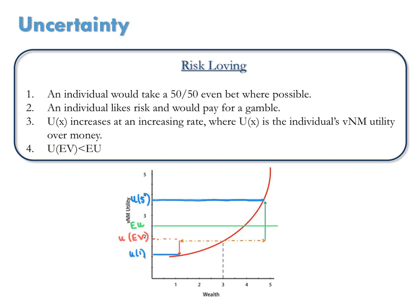For these individuals, option 2 is more attractive because the utility they get from getting $3 or the expected value of the lottery is now smaller than the expected utility of the lottery itself.